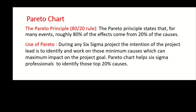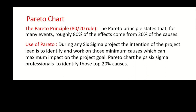So let's understand the use of Pareto. During any quality project, Six Sigma, or Lean Six Sigma project, the intention of the project lead is to identify and work on those minimum causes which can maximum impact the project goal. Pareto chart helps Six Sigma professionals to identify those top 20% causes.